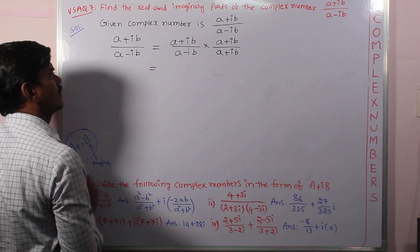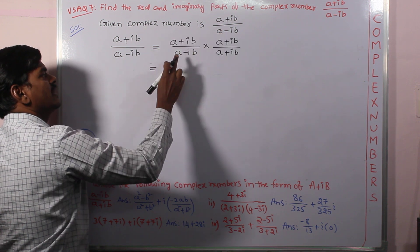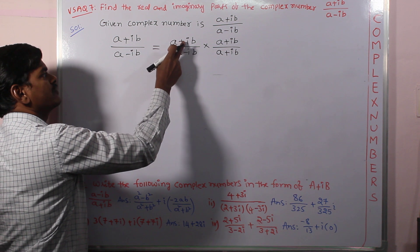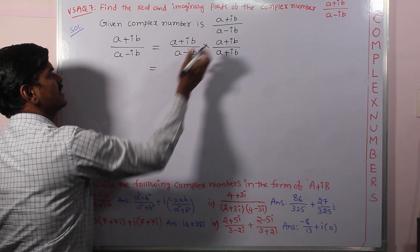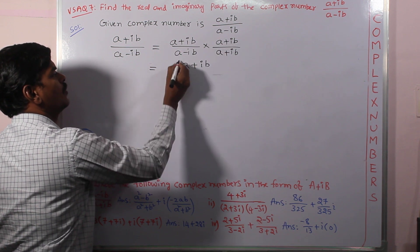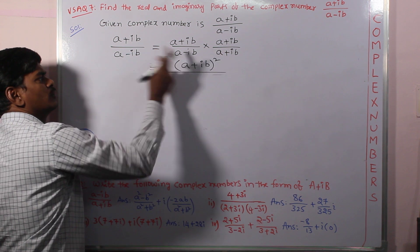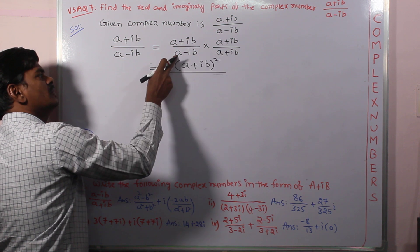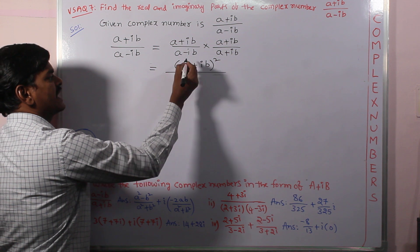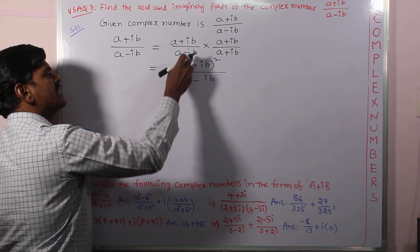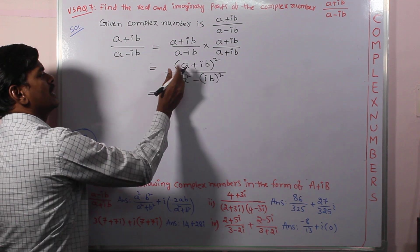Now from here, simplification as usual: numerator times numerator divided by denominator times denominator. If you observe both numerators, we have (a + ib) × (a + ib), which is (a + ib)². The denominator is of the form (a + b)(a - b), using the formula a² - b², so it becomes a² - (ib)².